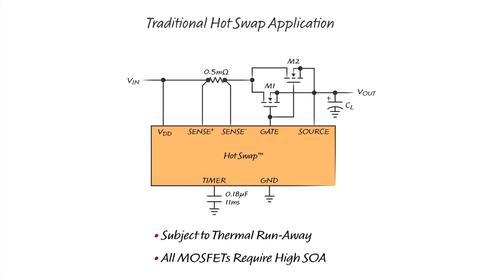When MOSFETs are fully enhanced in this configuration they share current well because their RDS(on) has a positive temperature coefficient that makes hot MOSFETs more resistive, which diverts current into the other cooler MOSFETs. However, when the MOSFETs are regulated by the hot swap controller, the sharing between the MOSFETs is dominated by their threshold voltages, which have a negative temperature coefficient, causing a hot MOSFET to dissipate more power as it heats, leading to a thermal runaway condition.